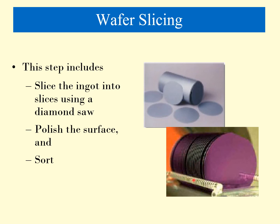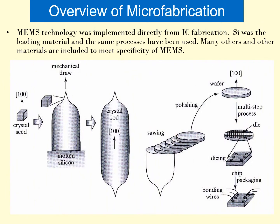Once the boule is created, it is sliced into wafers, and the surface of these silicon wafers is polished. The wafers are then stored at the wafer stand. On these wafers, the IC process or MEMS process is performed. From a single wafer, we can fabricate around 100 ICs or 100 MEMS sensors. This is how microfabrication is done — this is the overview of microfabrication.